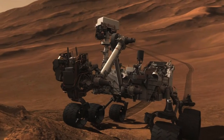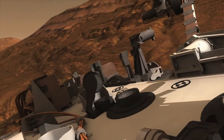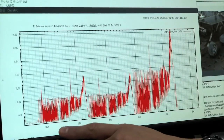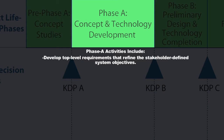For a Mars mission, stakeholder objectives might include looking for water on Mars or studying the atmosphere of Mars to understand its composition. The engineering staff then has to determine what requirements to levy on the system to look for water or analyze the atmosphere. You get into lower and lower levels of specificity on how the system needs to work to accomplish those high-level objectives, with top-level being the first level of requirements you define.